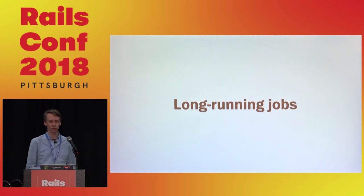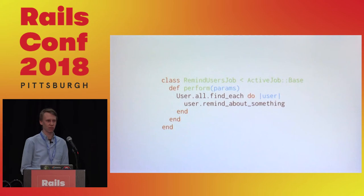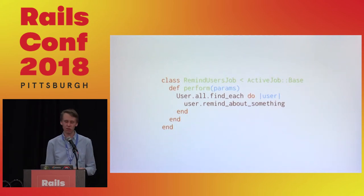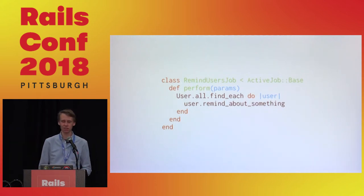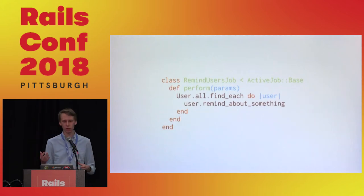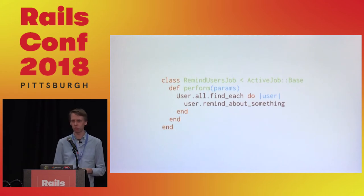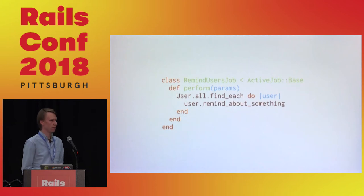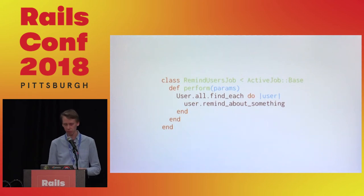However, this might be a bit trickier for long-running jobs. Here's an example of a very simple job that can become long-running: it iterates over some records in the database and calls a method on an ActiveRecord object. If you have just a few users, this job would complete within seconds or maybe a minute. But as you grow to a size like ours, we have millions of records. We've had jobs doing similar things that would take weeks to iterate over all records and do something with those records. So how do we shut down these workers?